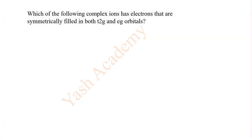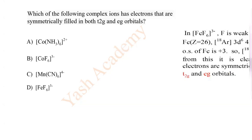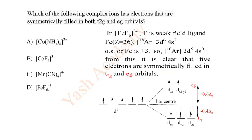Which of the following complex ions has electrons that are symmetrically filled in both T2G and EG orbitals? Here four options are given. You have to find out the weak field ligand in given complexes and then check the atomic numbers. So here the correct answer option of this question is D: FeF6³⁻.